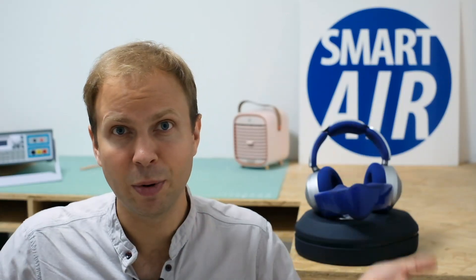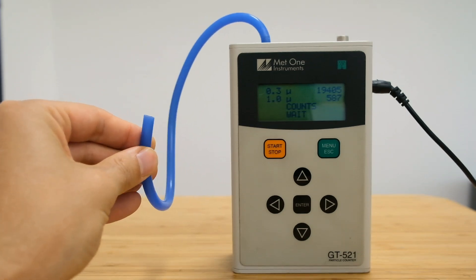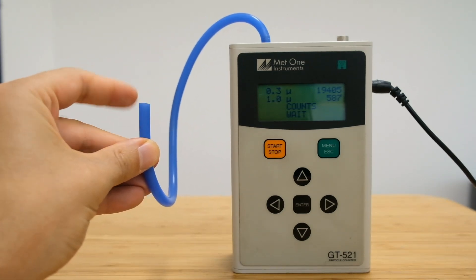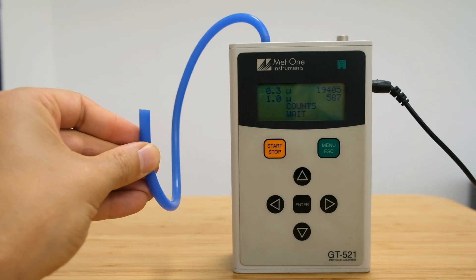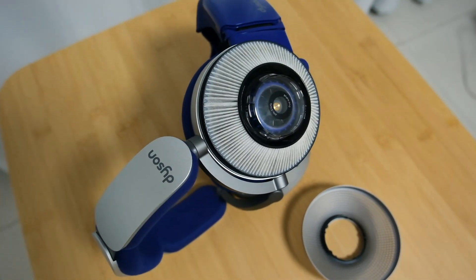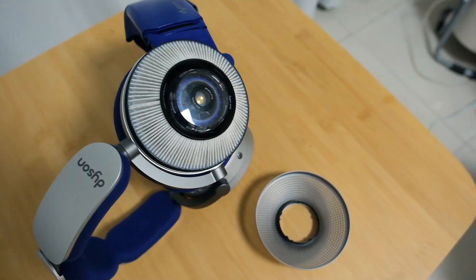What we did is we jumped into the Smart Air testing lab and we filled it with pollution and then we tested the air outside of the mask and inside the mask. So this is a pretty common test, it's what's called a fit test and essentially you're comparing the pollution outside with the pollution that you're breathing inside the mask.